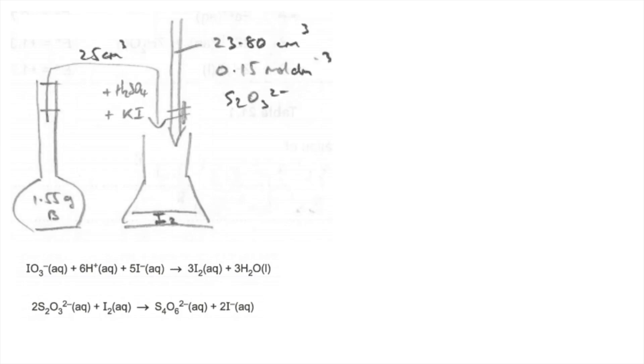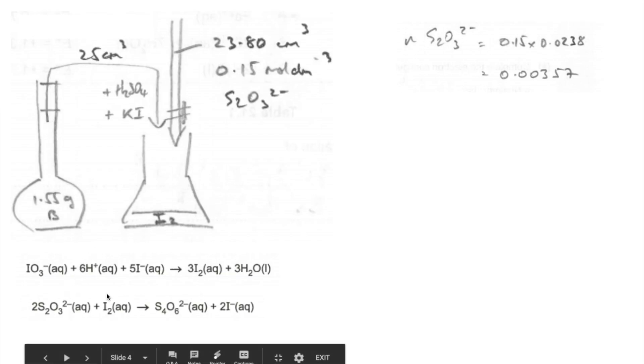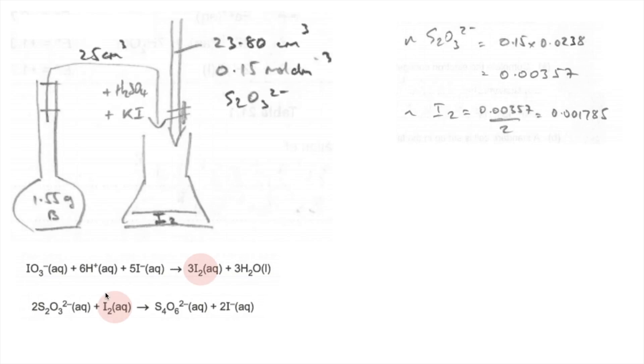So the first thing we can calculate is the moles of thiosulfate used in the titration, in that average titre. However, the moles of iodine that must have been in the conical flask is going to be half of that from this ratio here. So we'll just simply divide that by 2. Now the thing to remember here is the moles of iodine in the titration are those moles. So we don't treble going between these two equations. You can't apply mole ratios across two different equations. So therefore, the moles of iodate 5 in 25 cm³ from this flask, the 25 that came out, is a third of the iodine moles.